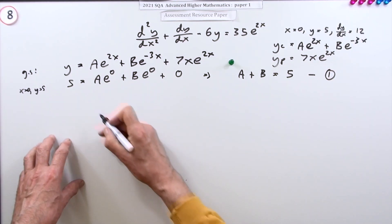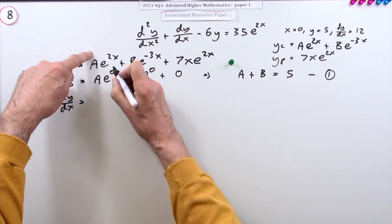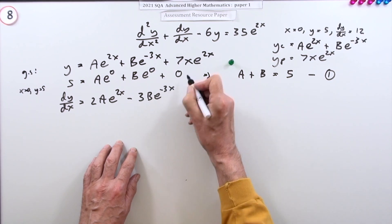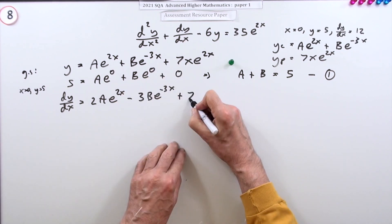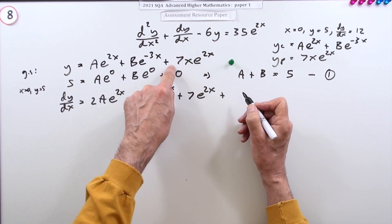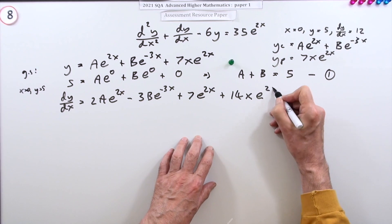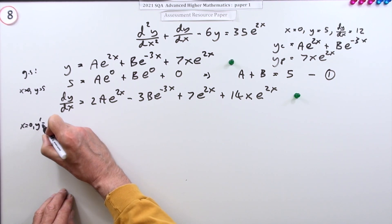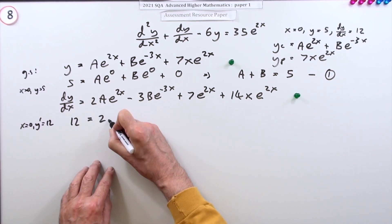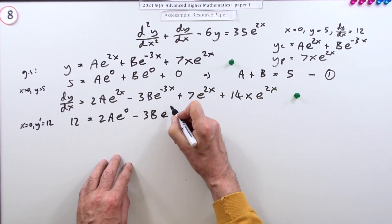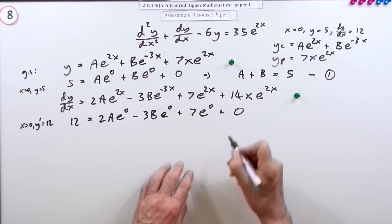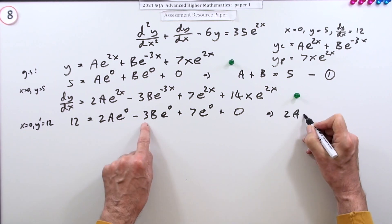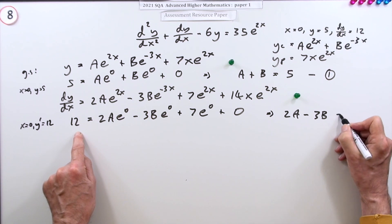For the second condition we need the derivative. Differentiating the general solution: y' = 2Ae^(2x) − 3Be^(−3x) + 7e^(2x) + 14xe^(2x). Finding that derivative earns a mark. Applying y'(0) = 12: 2A − 3B + 7 + 0 = 12, so 2A − 3B = 5.